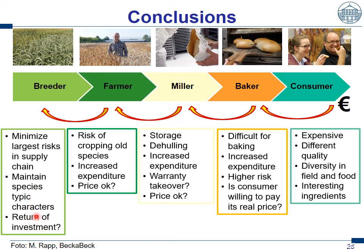Importantly, we have to ask the question as a breeder: is it worthwhile to invest? Breeding a new variety takes 10 to 15 years and costs 1.5 million Euro. Thus it's very expensive, and the breeder has to ask himself whether he gets back the money. The same for the farmer: is the price he gets okay, especially taking into account the high risk of cropping due to lodging risk or disease risks? He has reduced grain yield, thus increased expenditure and reduced yield — so he gets an acceptable price for it?